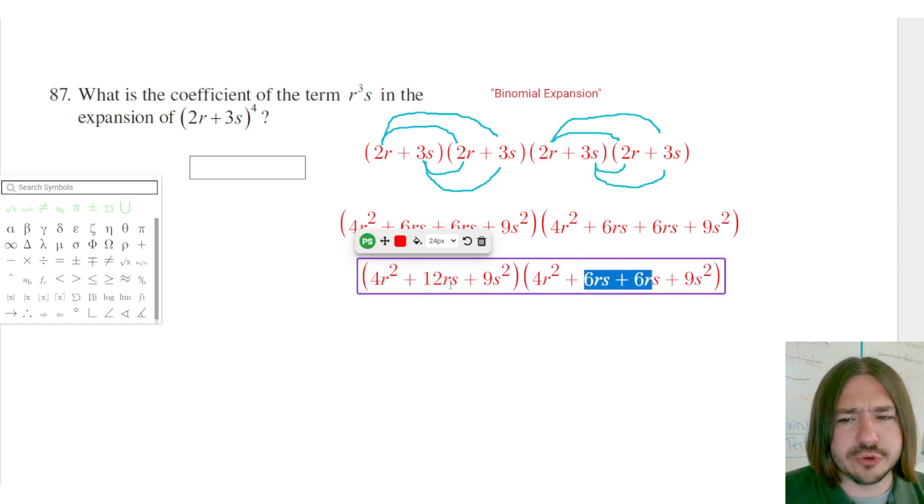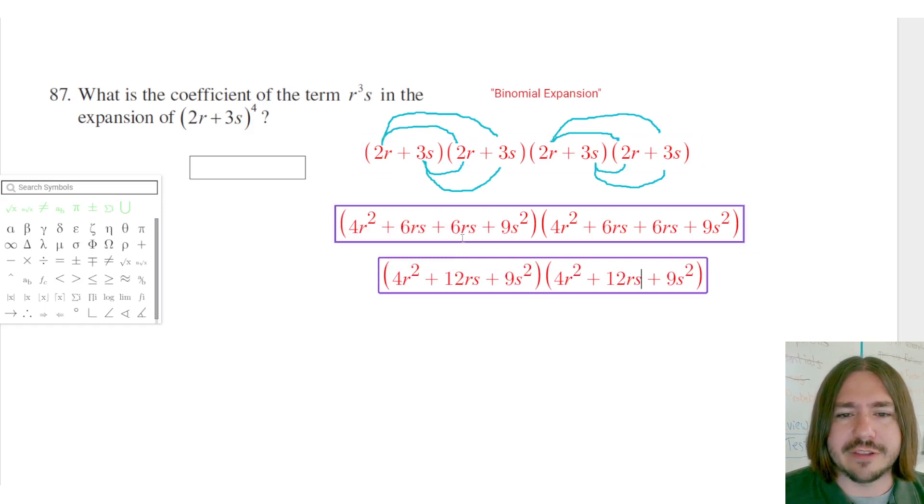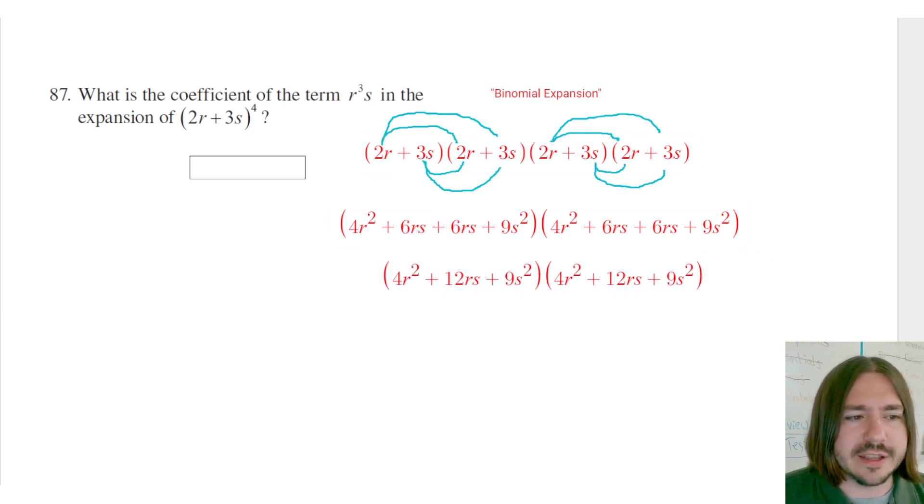Now, here I'm multiplying two trinomials. So there's a lot of lines going on here. It's kind of easy to get lost and kind of lose track of what you've already multiplied and all that.